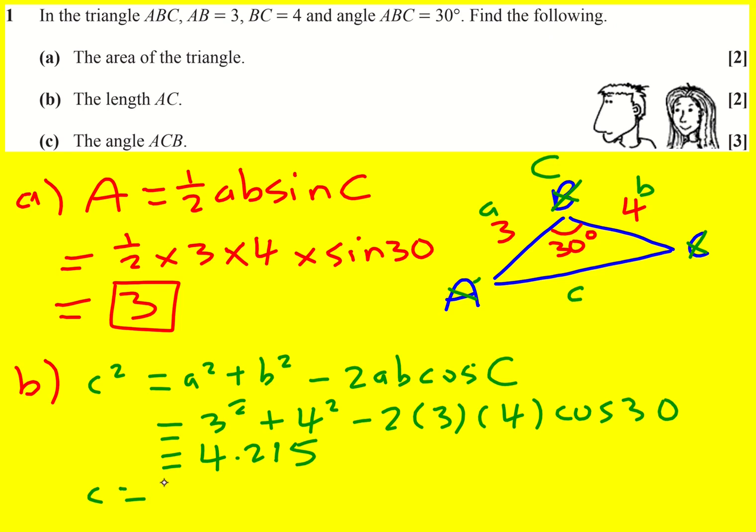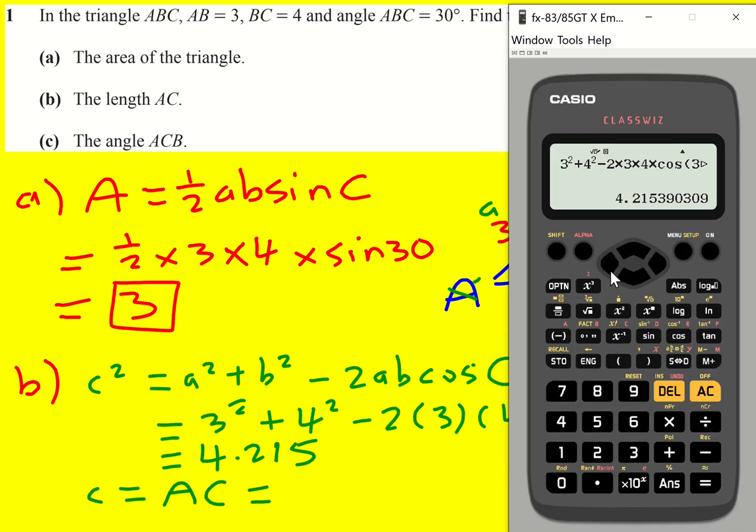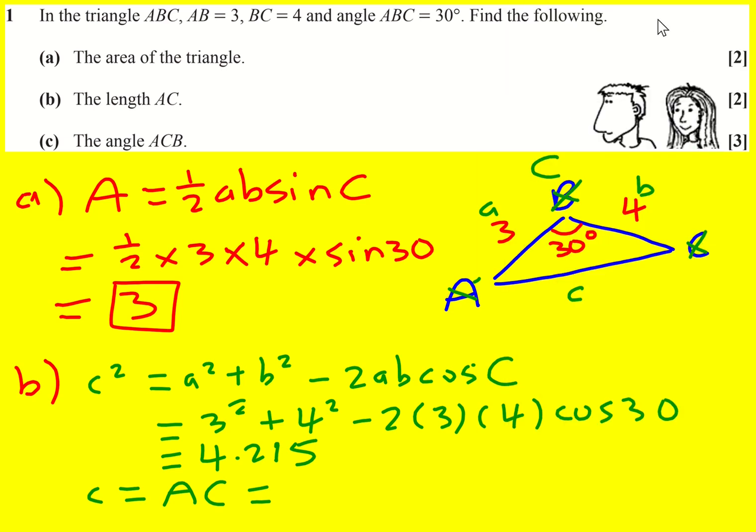So C, which is equal to AC, is the square root of that. 2.0531. And I mean that's enough. It's not asked us to round it, but typically round to three significant figures. So 2.05.